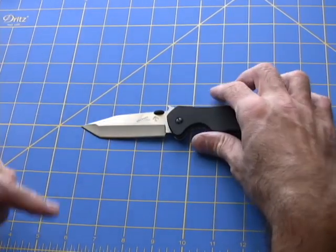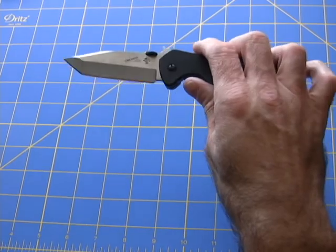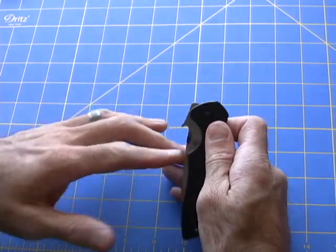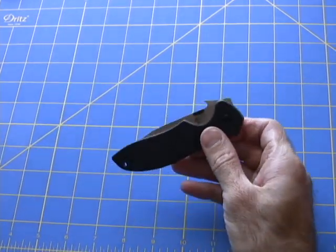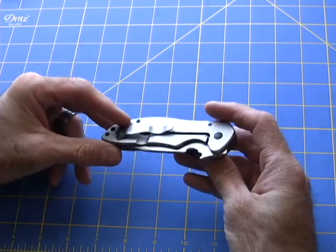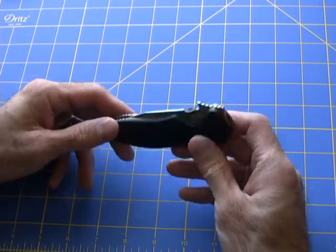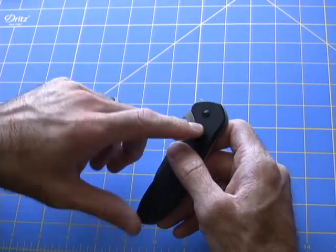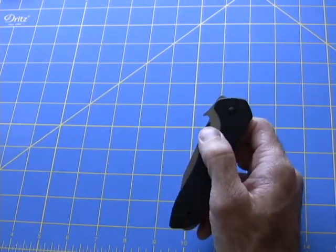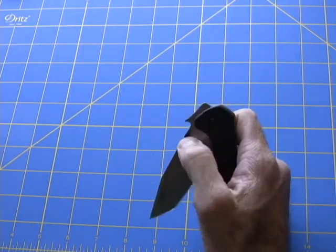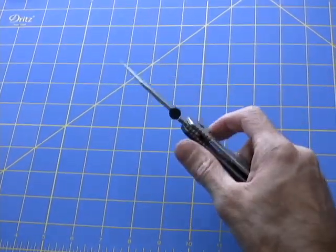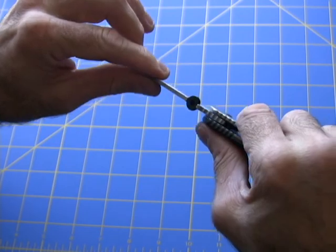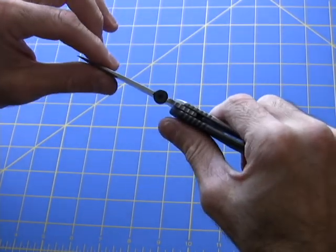When I got this knife, for whatever reason the blade did not want to come out easy. It was not smooth whatsoever. I don't know if that was because of lube, maybe lack thereof, or quality control. I did have to take this tension screw, loosen it, and then adjust to my desired opening. As you can see, there's no blade play at all. There's no wiggle, no side to side, so that's very nice.